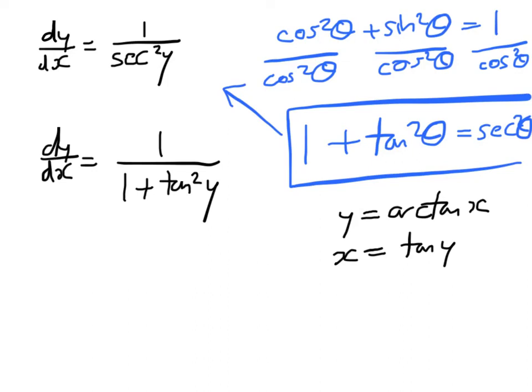Well, that's easily done. X squared must equal the tangent squared of y. So subbing that back in, I can see that dy by dx equals 1 over 1 plus x squared.